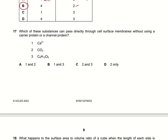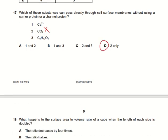Which substance can pass directly through the cell surface membrane without a carrier protein or channel protein? K⁺ ions need a carrier protein. Glucose molecules also need a protein. Carbon dioxide gas does not require any protein and can pass directly through the membrane. So option D is the right answer.